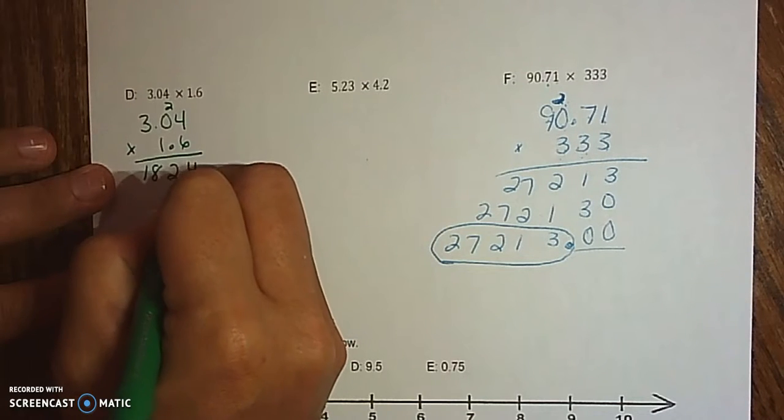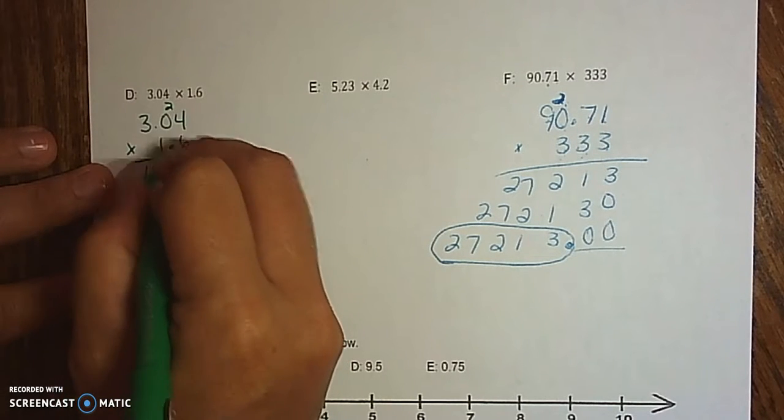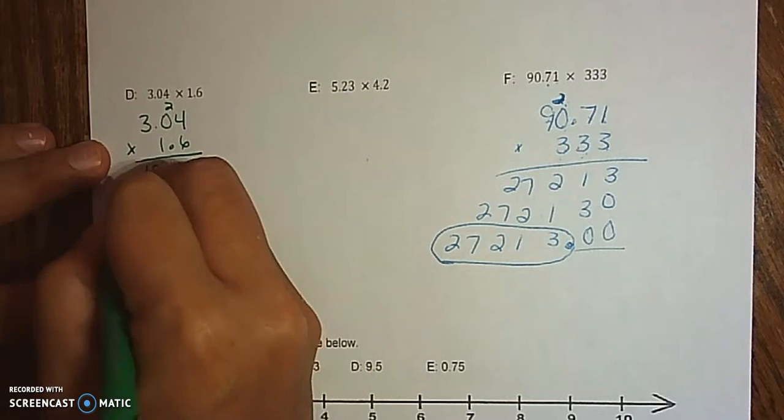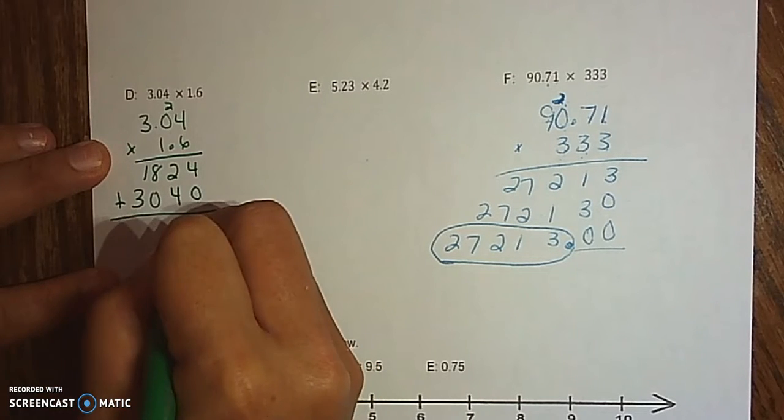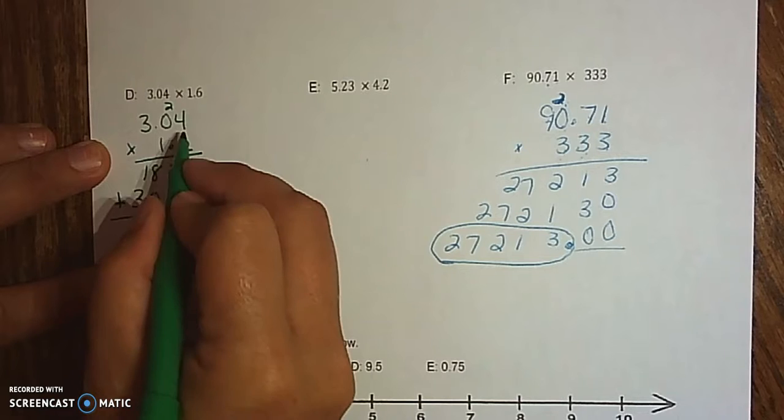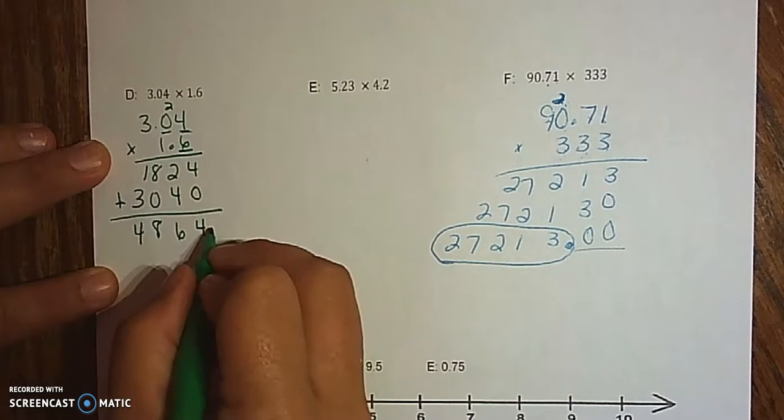6 times 3 is 18. Bring down a 0. 4 times 1 is 4. 0 times 1 is 0. 3 times 1 is 3. Add those together. 4, 6, 8, 4. We have 1, 2, 3 decimals.